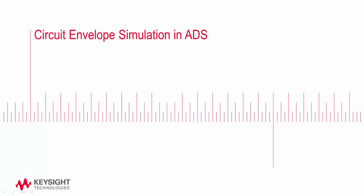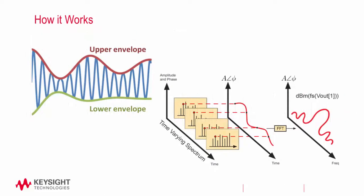Circuit envelope simulation combines features of both time and frequency domain simulation, offering a fast and complete analysis of complex signals such as digitally modulated RF signals. Essentially, circuit envelope simulation is a combination of transient and harmonic balance simulation. Instead of sampling the RF carrier signal, it samples the modulation envelope.